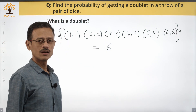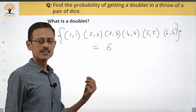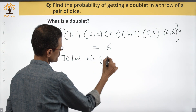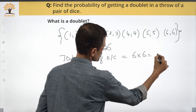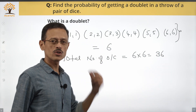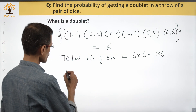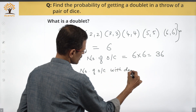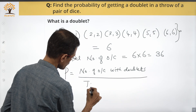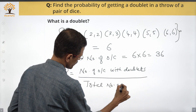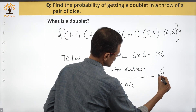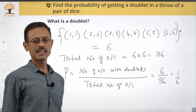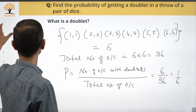When you throw a pair of dice, the total number of outcomes is 6 × 6 = 36. The required probability equals number of outcomes with a doublet divided by total number of outcomes = 6/36 = 1/6.